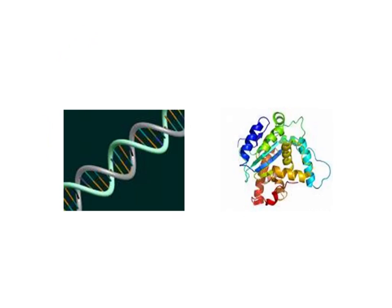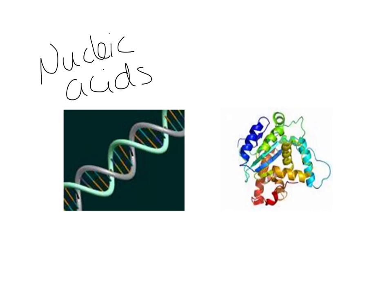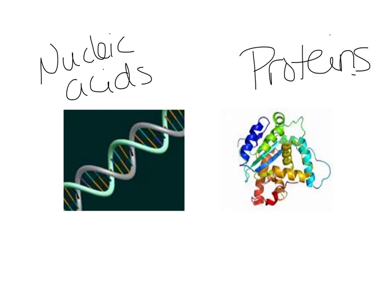Switching over to our nitrogen cycle. Remember these are the reasons why we need nitrogen: our nucleic acids — our DNA and RNA — are made of nucleotides that have those nitrogen bases. All organisms have DNA and RNA, as well as proteins. Remember proteins are made of amino acids — that's the monomer of proteins. They have that repeating NCC pattern. A lot of proteins act as enzymes, so they control chemical reactions. So proteins are extremely important to all organisms.